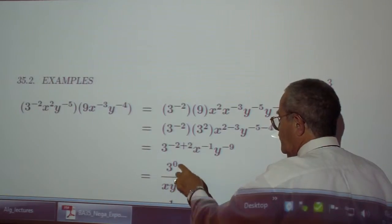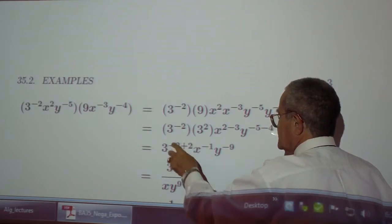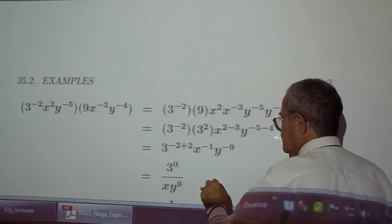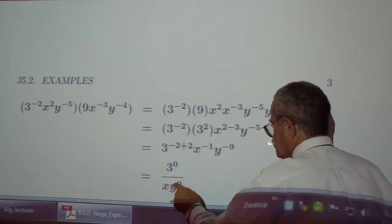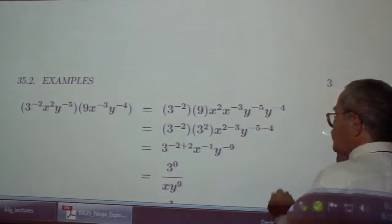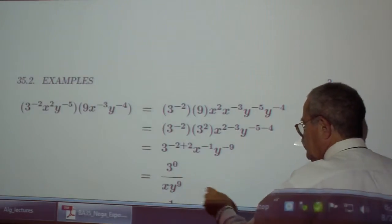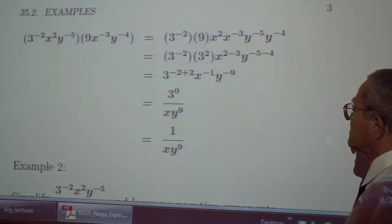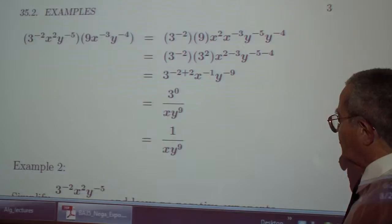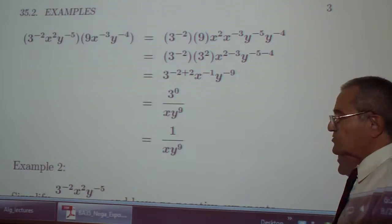Here you have negative 4. Here you have 0, and 3 to the 0 is 1, x to the negative 1 is 1 over x to the positive 3, y to the negative 9 is 1 over y to the 9. So your result is 1 over x times y to the 9th power.